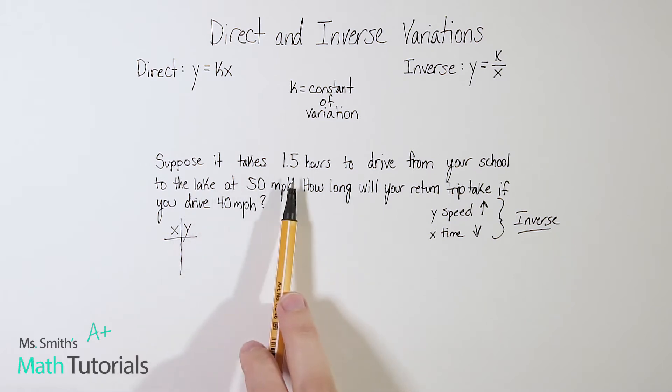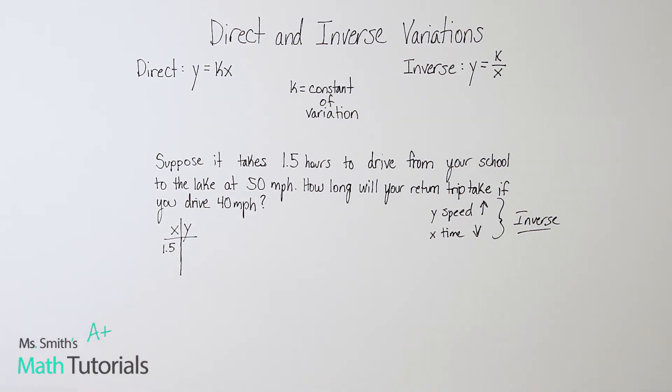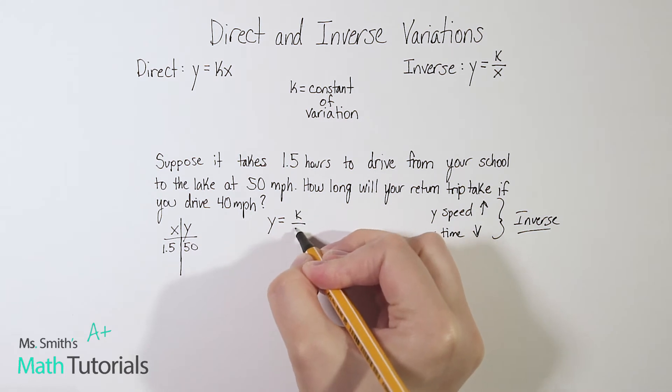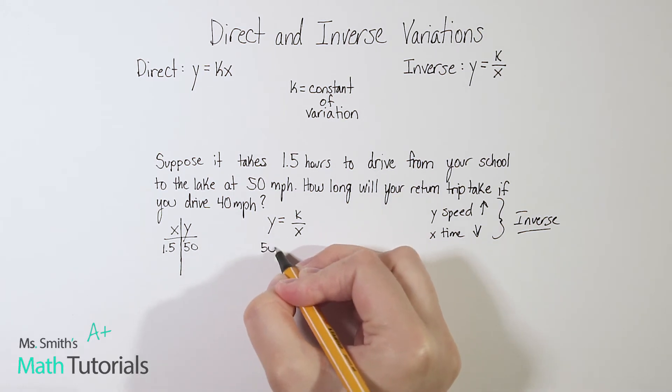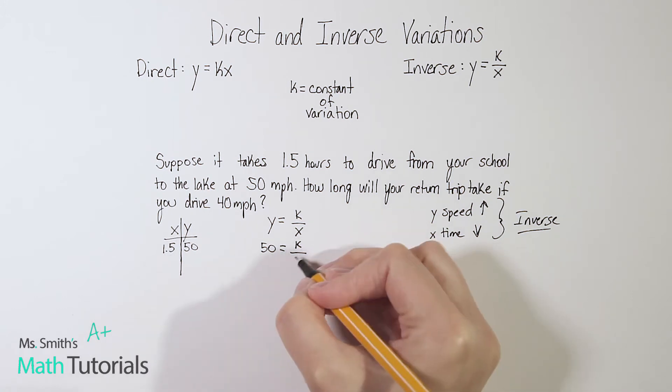In this case, if it takes 1.5 hours, 1.5 for x at 50 miles per hour. So that's our speed at 50 miles per hour. So let's use this equation, I'm going to bring it down, y equals k divided by x. And I'm going to plug in what I know y is, and what I know x is, and I'm going to use that to figure out what is the constant, what is that k.